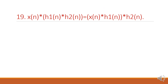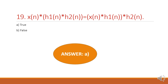Next question: X of n convolution with H1 of n convolution with H2 of n equals what? According to the associative property of convolution, the above statement is true. Therefore option A is the right answer.